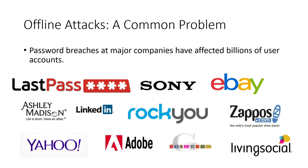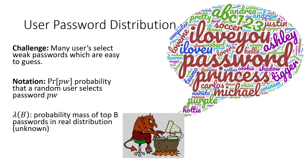Offline attacks are a common problem. Password breaches at major companies have affected billions of user accounts. We can see here an incomplete wall of shame with companies like LastPass, Ashley Madison, and Yahoo responsible for millions or even billions of password breaches. Shown on the right is a word cloud showing popular password distributions from the RockU breach.